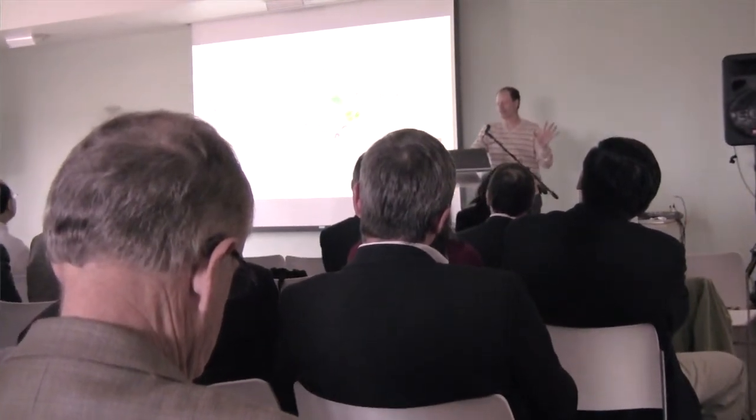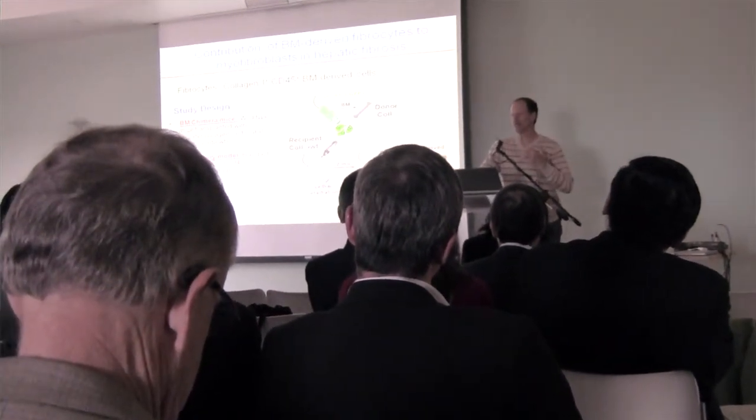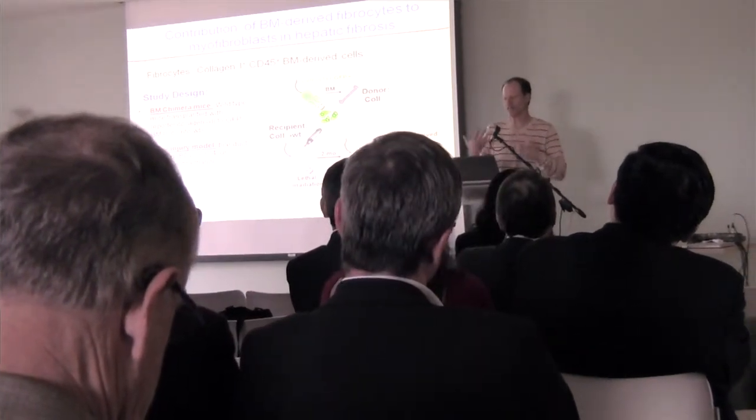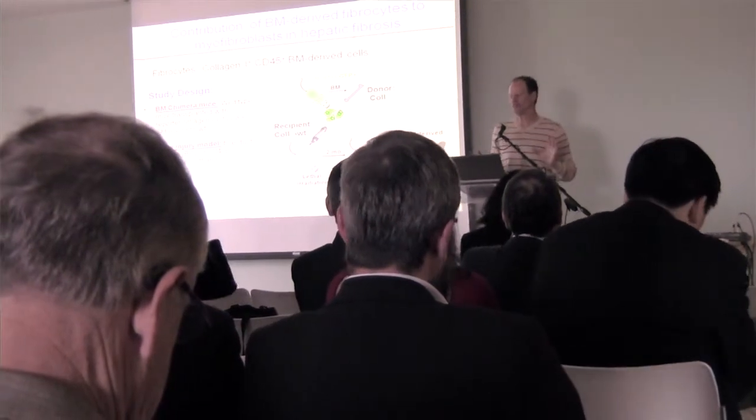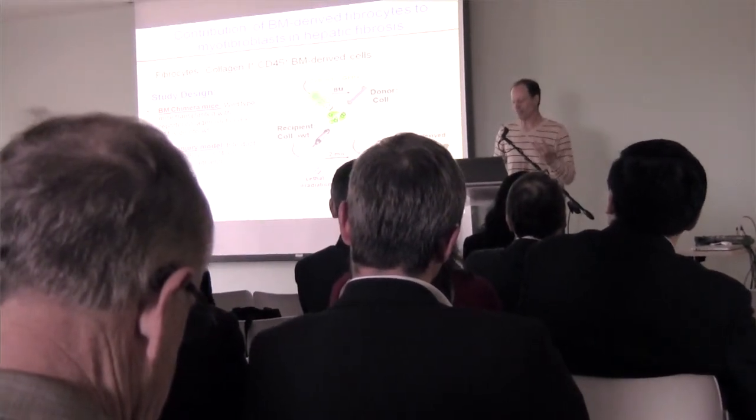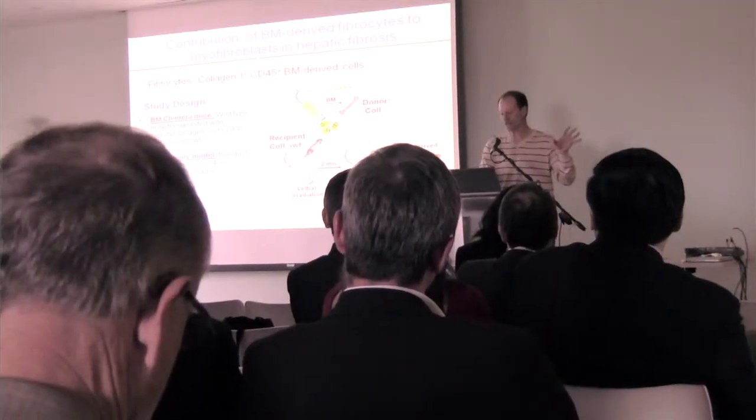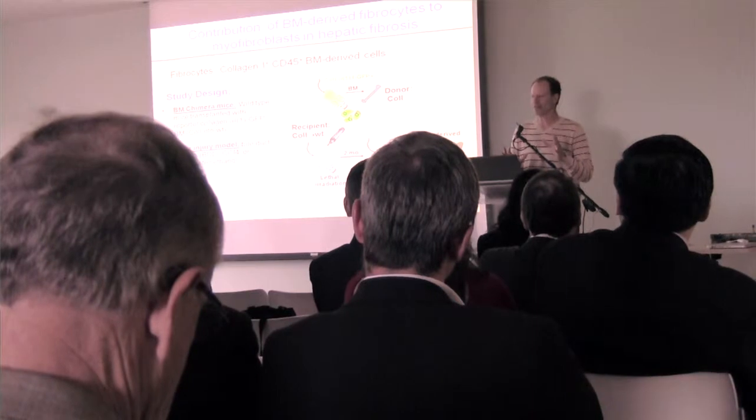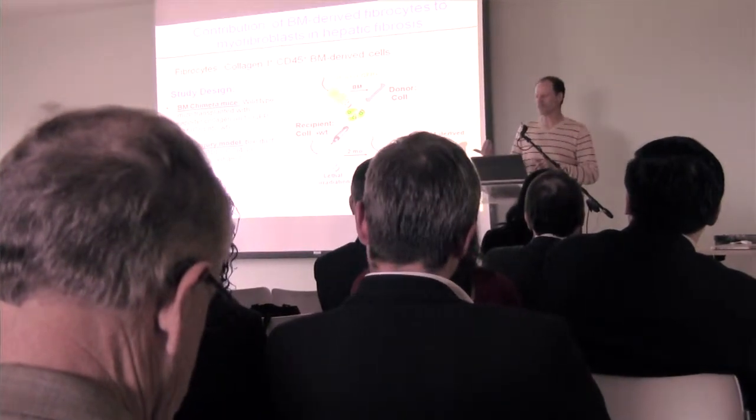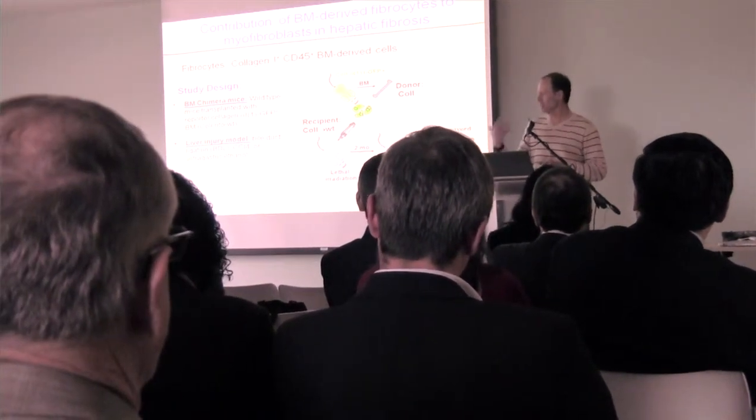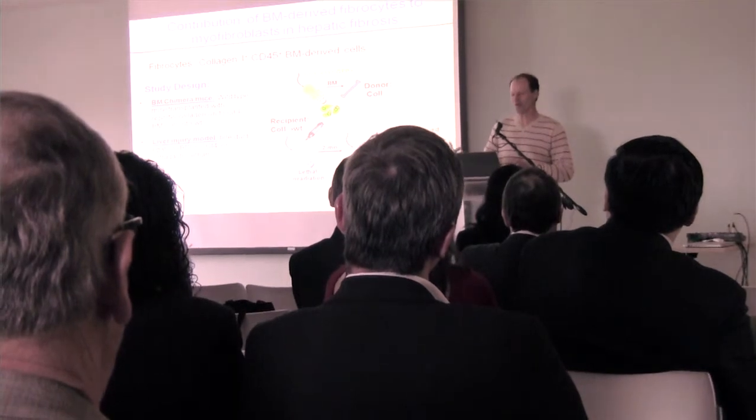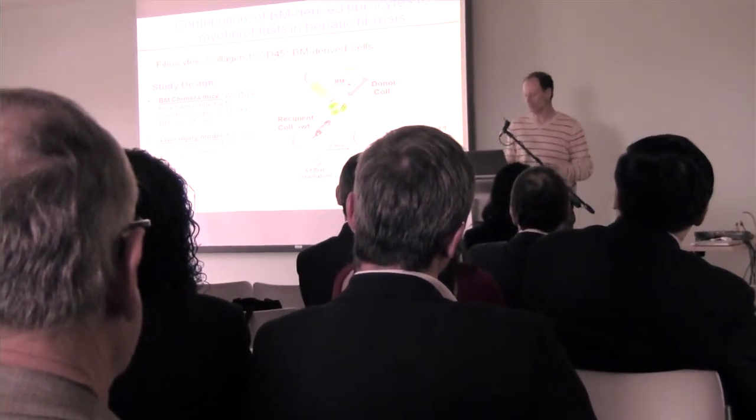The second area is whether or not you can be recruiting cells that become myofibroblasts in situ from the bone marrow. This is readily experimentally testable. We take the collagen 1 GFP mouse and do a bone marrow transplant. We transplant that GFP bone marrow into a wild type recipient and then induce liver fibrosis. If any of the myofibroblasts are coming from the bone marrow, you will see GFP positive myofibroblasts in the liver.